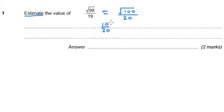So actually, an estimate for the value of this sum here is the same as 10 over 20. And the answer to that is a half, or 0.5.